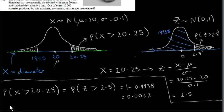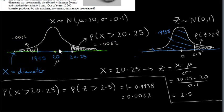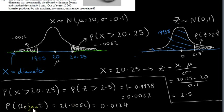The probability that we reject a battery is the sum of the areas of both tails. We've established that the right tail area is 0.0062. By symmetry, the left tail area is also 0.0062, since 20.25 and 19.75 are equidistant from the mean of 20. So the probability that we reject a randomly selected battery is 2 times 0.0062, which is 0.0124.